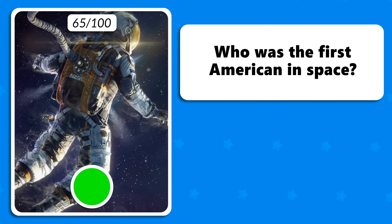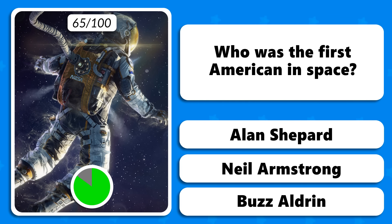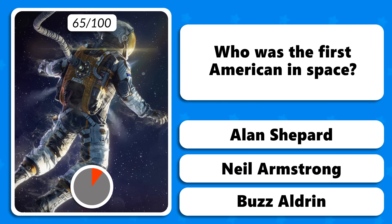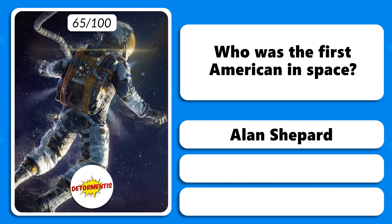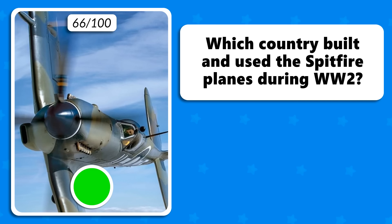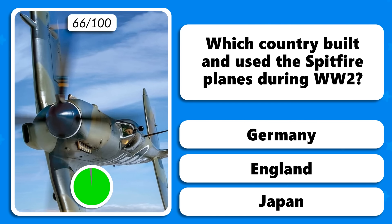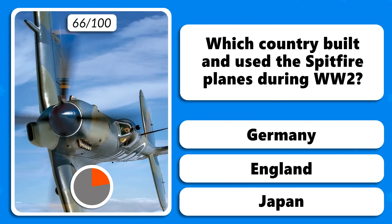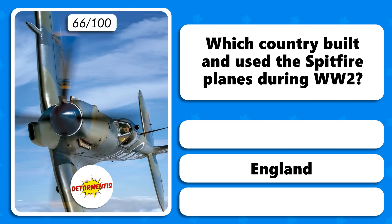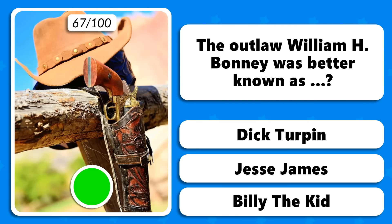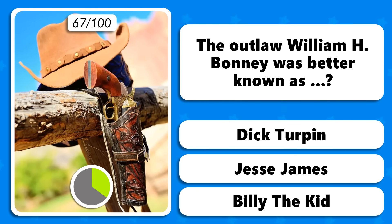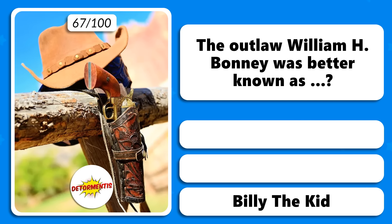Who was the first American in space — Alan Shepard, Neil Armstrong or Buzz Aldrin? Alan Shepard. Which country built and used the Spitfire planes during World War II — Germany, England or Japan? The correct answer is England. The outlaw William H. Bonney was better known as Dick Turpin, Jesse James or Billy the Kid? Billy the Kid.